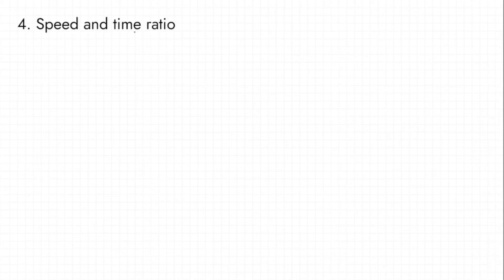What is the speed ratio and time ratio? We divide the distance and time to get speed. Distance is equal to speed into time.